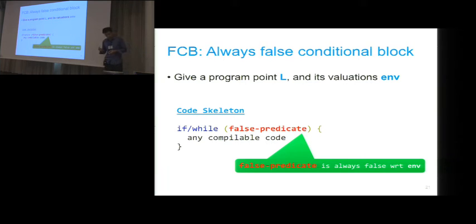The first synthesizer is pretty straightforward. This is the code snippet skeleton that we want to insert into the program point L. We just randomly generate if or while statement whose conditional is always false with respect to the observed environment. Then in the body we just insert any arbitrary compilable code. The compilable code could contain undefined behavior but we don't care, because the conditional is always false so the code is not executed. We are just trying to fool the compiler. Another point is that the false predicate, although it's always false with respect to the environment, if you change the input to another one it might be true. So from the perspective of compilers, the compiler doesn't know that this is always false.